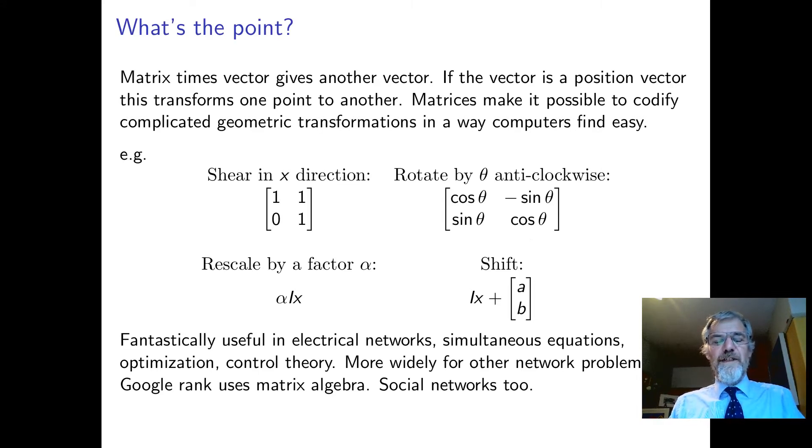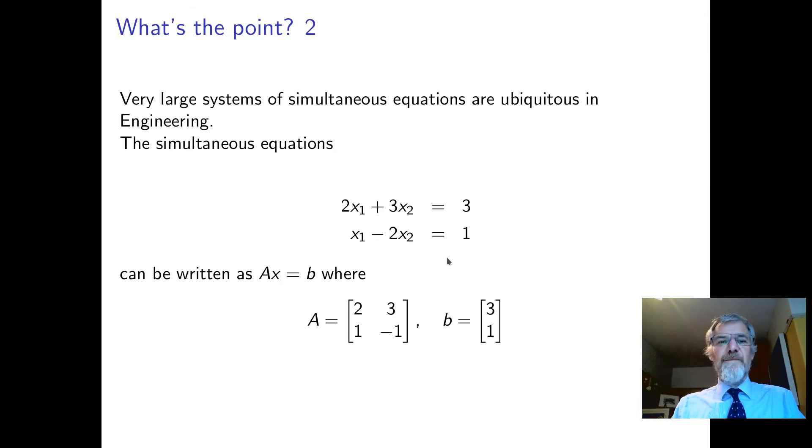Matrices are very widely used in control theory and optimization. Electrical networks was one of the original motivations. Even the Google rank is a problem in matrix algebra, the way that Google sorts things. One of the prime examples is simultaneous equations. If we have this simple pair of simultaneous equations, we can abstract it as Ax equals b, where A is the coefficients of x_1 and x_2, and b is the column vector 3, 1. Then x has to be the column vector x_1, x_2. It's just a way of writing this simultaneous equation as one algebraic object, Ax equals b.